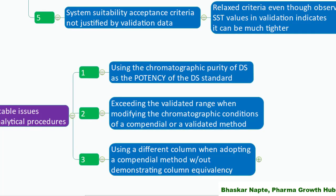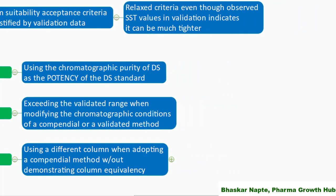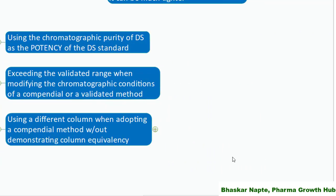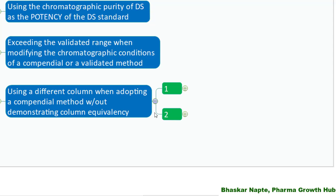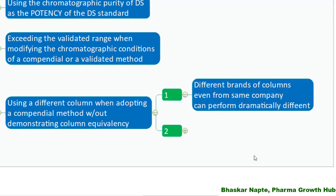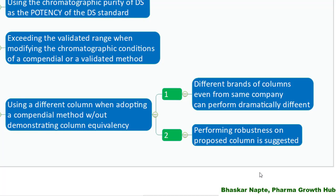Using a different column when adopting a compendial method without demonstrating column equivalency. Column equivalency is very important — without proving it, you cannot use an equivalent column. Different brands of columns, even from the same company, can perform dramatically differently. It is very important to prove that your proposed column performs equally well compared to the original column. Performing a robustness study on the proposed column is suggested.